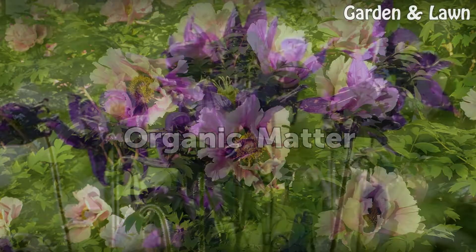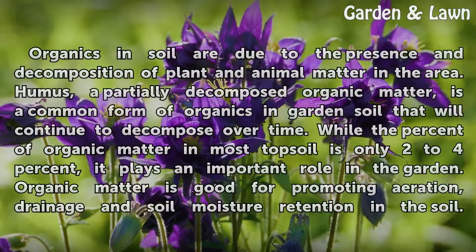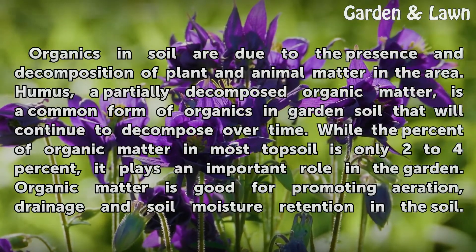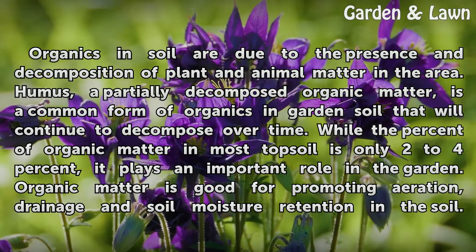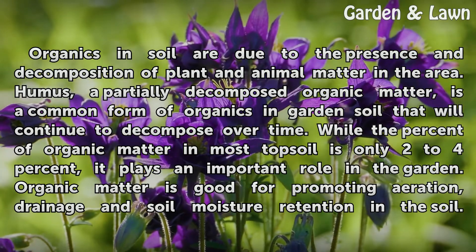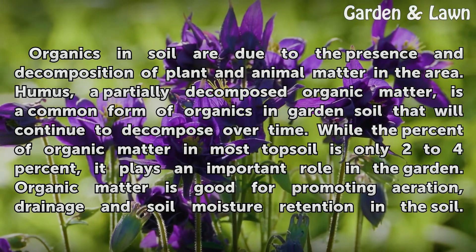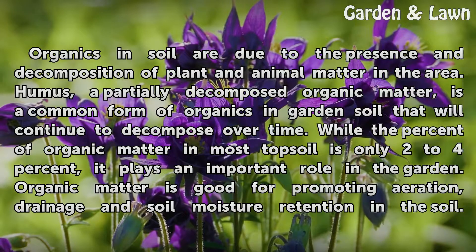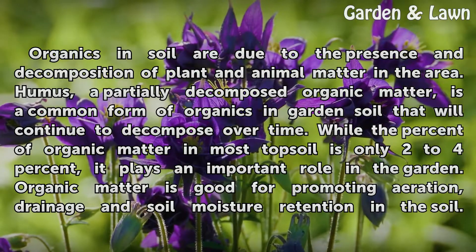Organics in soil are due to the presence and decomposition of plant and animal matter in the area. Humus, a partially decomposed organic matter, is a common form of organics in garden soil that will continue to decompose over time. While the percent of organic matter in most topsoil is only 2–4%, it plays an important role in the garden.